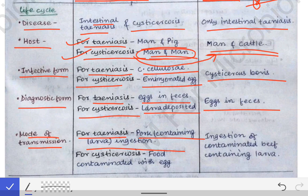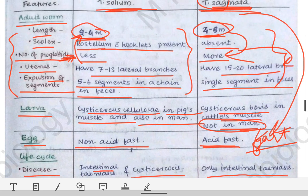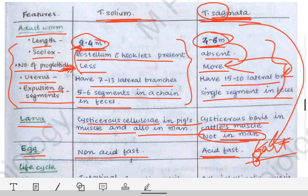The mode of transmission for taeniasis due to Taenia solium is ingestion of pork containing the larva. For Taenia saginata taeniasis, it is ingestion of contaminated beef containing the larva. For cysticercosis, the larva entering the human is itself transformed into adult form, eggs are laid, and those eggs travel through blood to skeletal muscle causing cysticercosis. These are the key differences between Taenia solium and Taenia saginata.